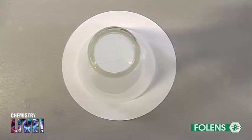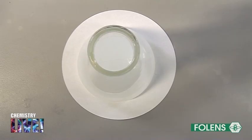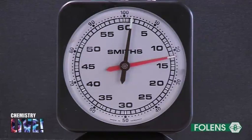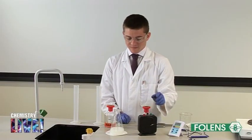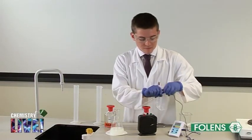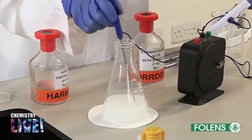Look at the cross through the solution and when the degree of milkiness reaches such a stage that the cross is no longer visible, stop the stop clock. Note the time taken in seconds and measure the temperature of the solution as some cooling may have taken place when the two solutions are mixed.